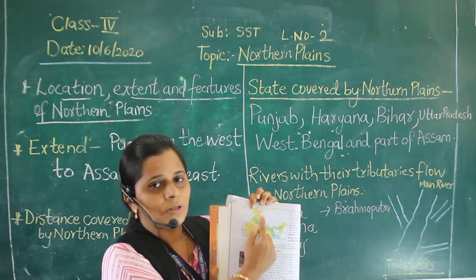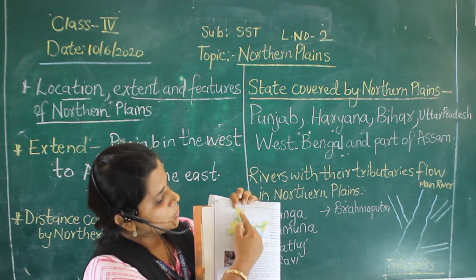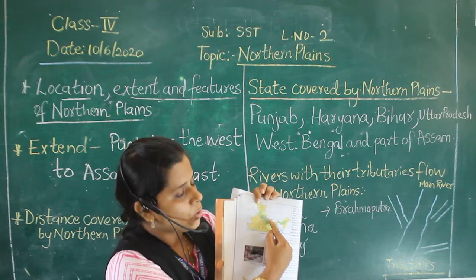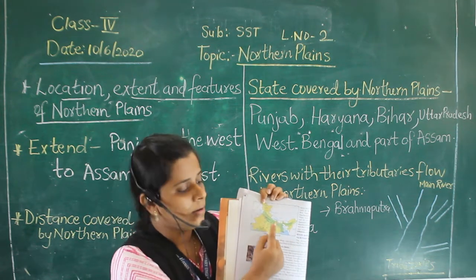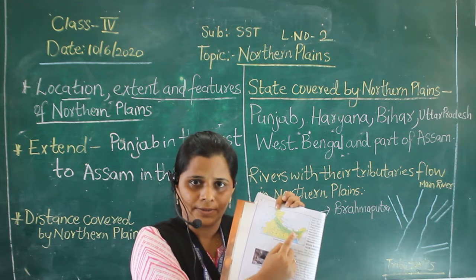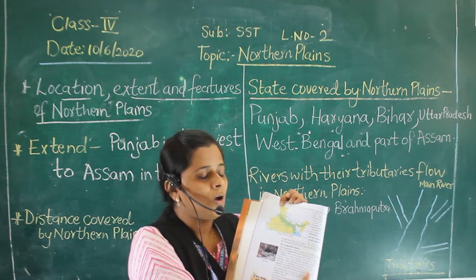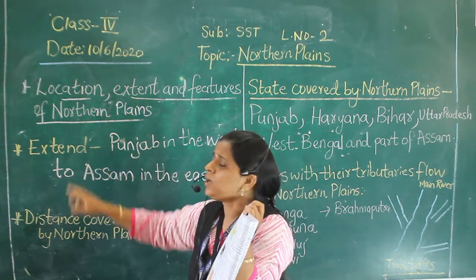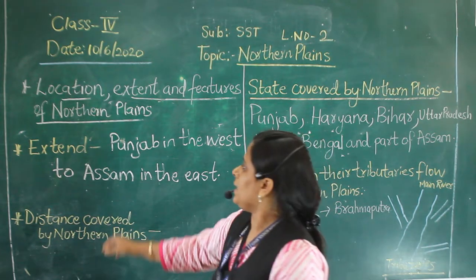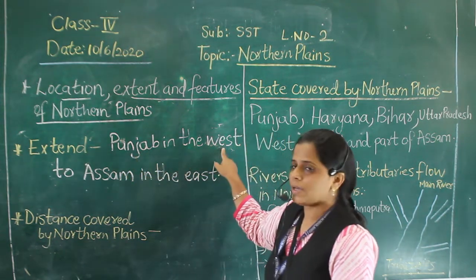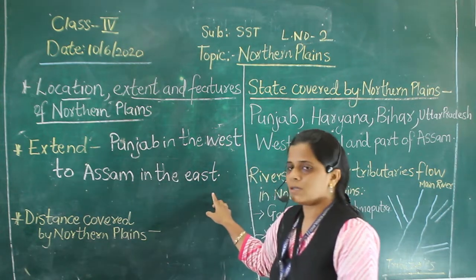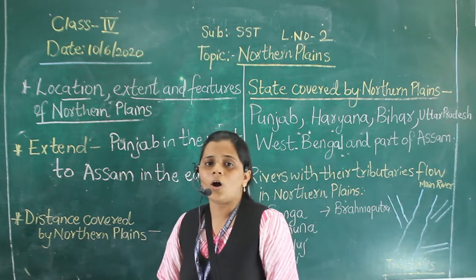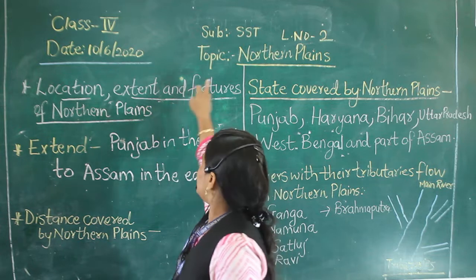Earlier you have learned about the northern mountains — they are situated to the extreme north of India. So to the south of the northern mountains, the northern plains are located. Now we will talk about the extent of the northern plains. It extends from Punjab in the west to Assam in the east.